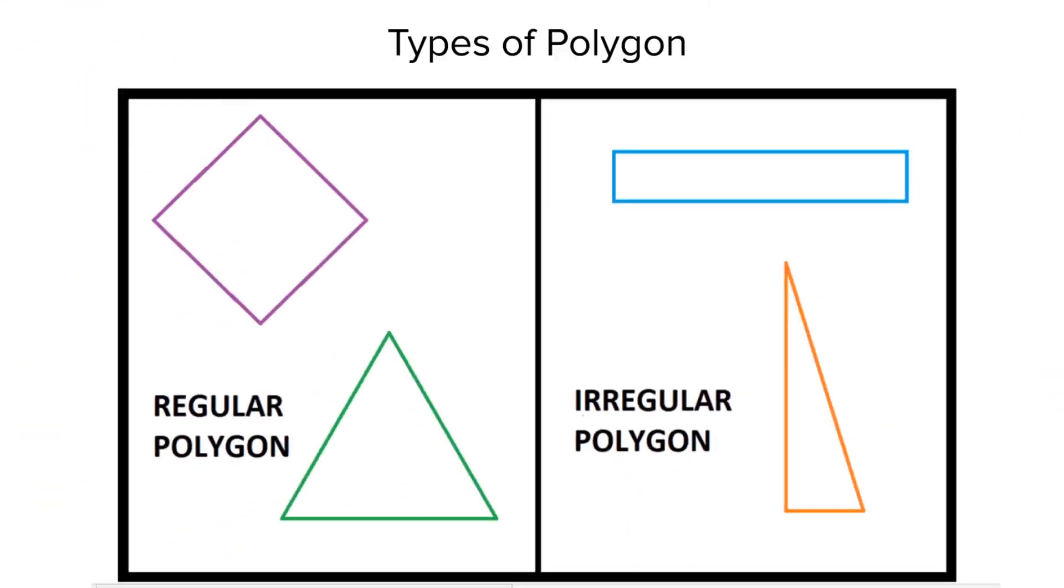And what is the difference between these two types of polygons? This is an irregular polygon. This means that all the sides of this polygon are not congruent. However, this is a regular polygon. This means that this polygon has congruent sides, and also, all interior angles of this polygon are equal.